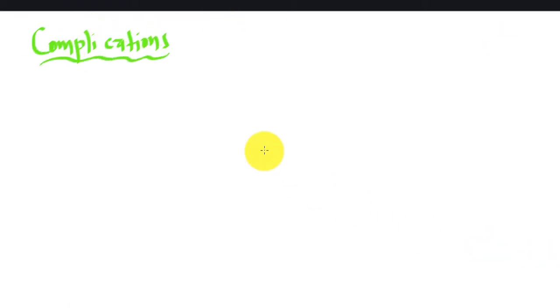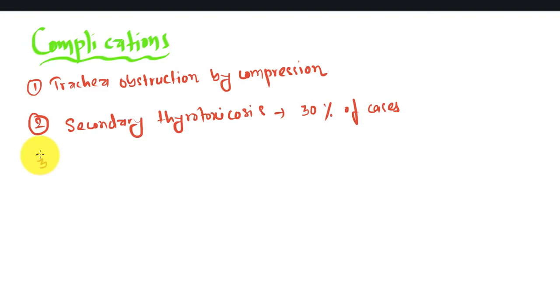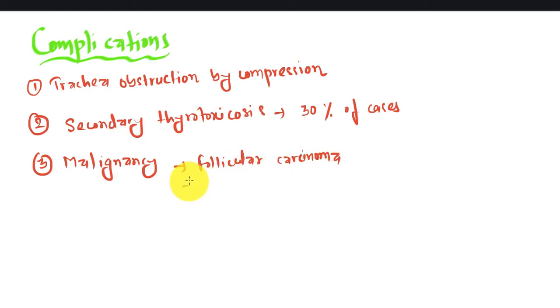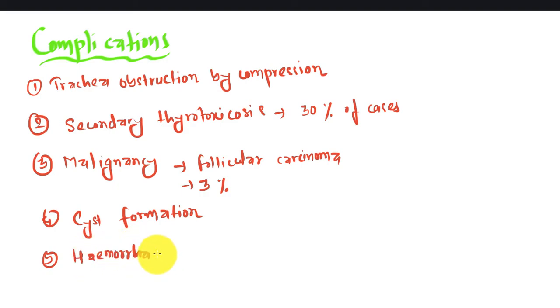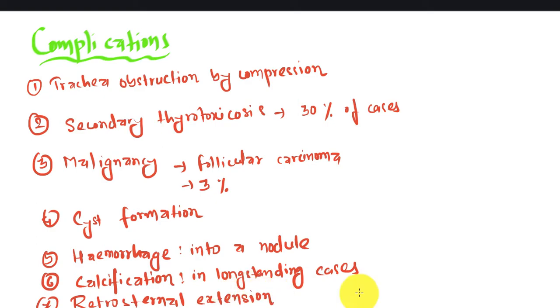Talking about complications of simple nodular goiter: the first is tracheal obstruction by compression. Second is thyrotoxicosis, occurring in 30% of cases. Malignancy — follicular carcinoma — can develop in 3% of cases. Hemorrhage into a nodule will cause pain and tenderness. Calcification can occur in long-standing cases, and retrosternal extension can also occur.